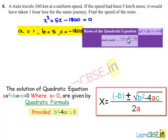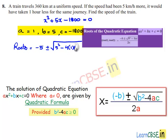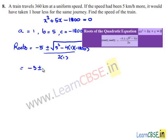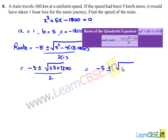The roots are minus b plus or minus the square root of b² minus 4ac, divided by 2a. Substituting: minus 5 plus or minus the square root of 5² minus 4 times 1 times minus 1800, divided by 2 times 1. This gives minus 5 plus or minus the square root of 7,225, divided by 2.